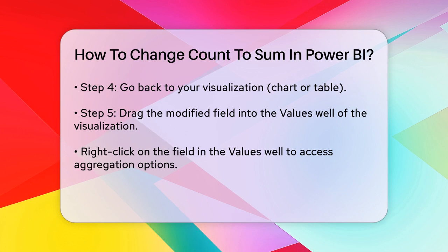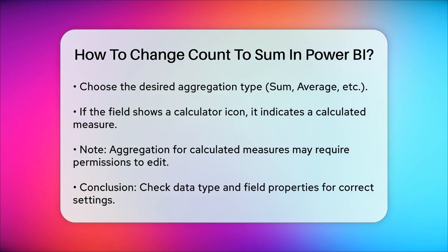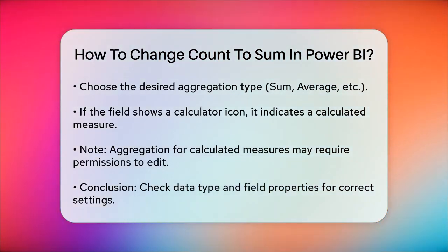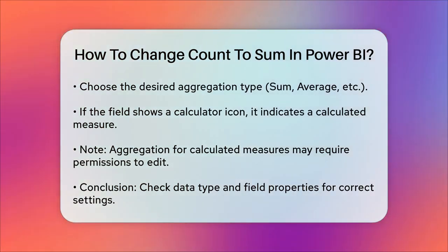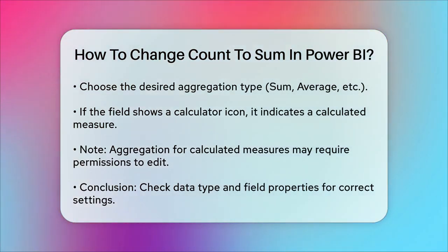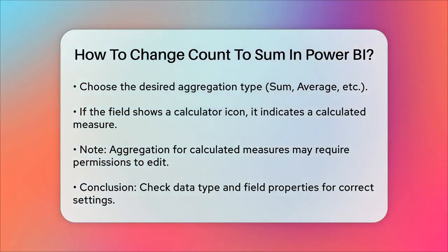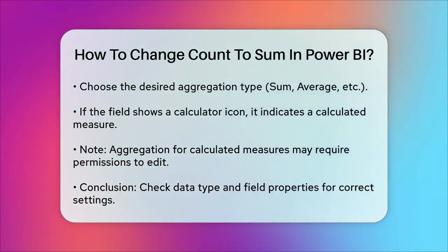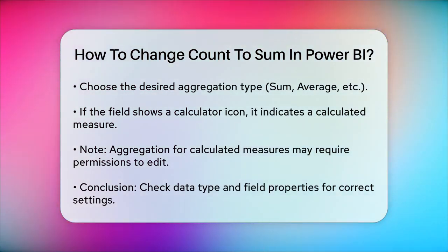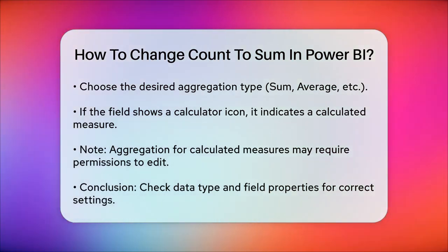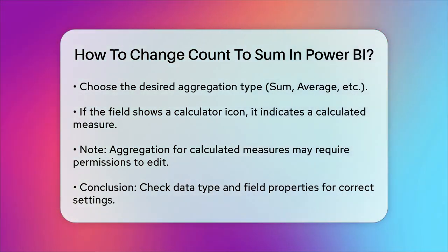Another common issue is when a field has a calculator icon next to it, indicating it's a calculated measure. In this case, the aggregation is hard-coded and can't be changed unless you have the permissions to edit the semantic model. If you're the owner, you can modify the measure's formula. Otherwise, you'll need to contact the semantic model owner for help. By following these steps, you should be able to change the count to a sum or any other aggregation type you need in Power BI. Remember to always check the data type and the field's properties to ensure you're working with the correct settings.